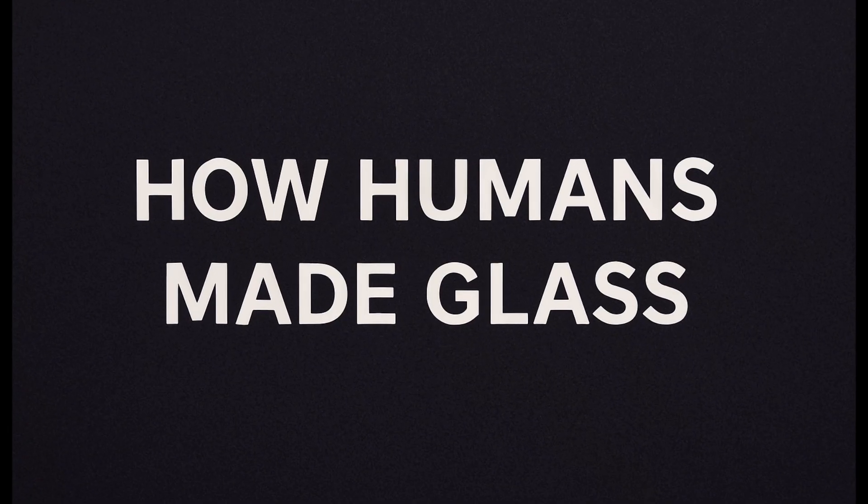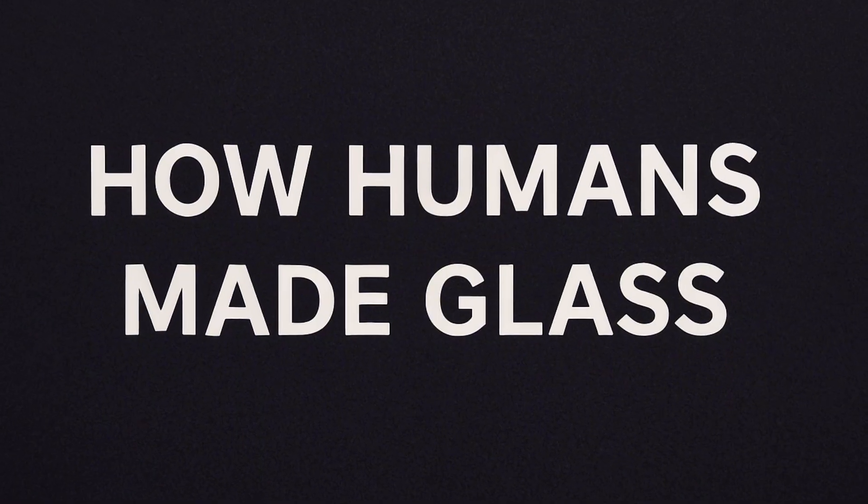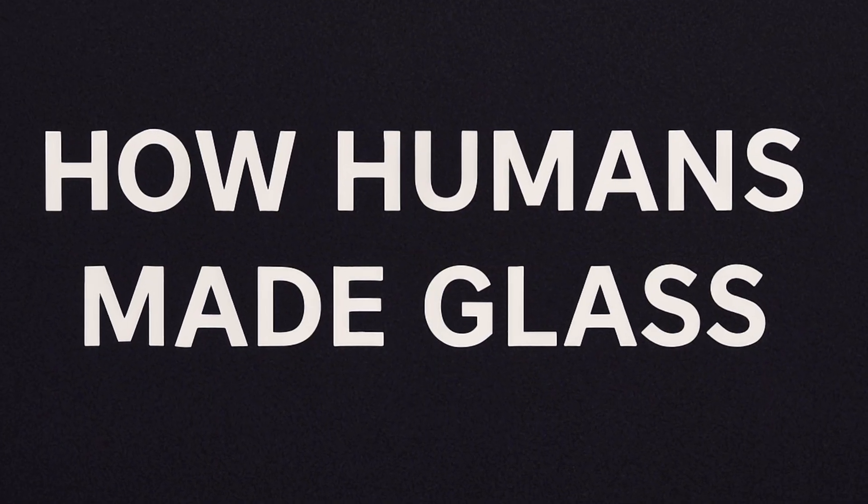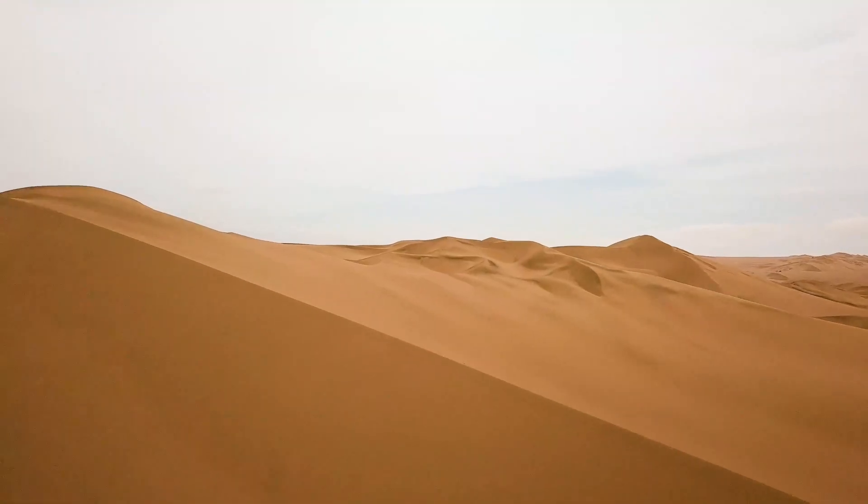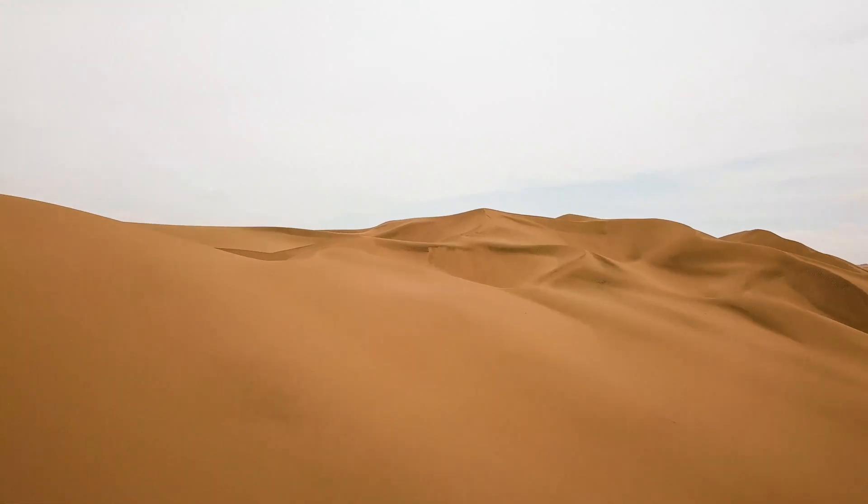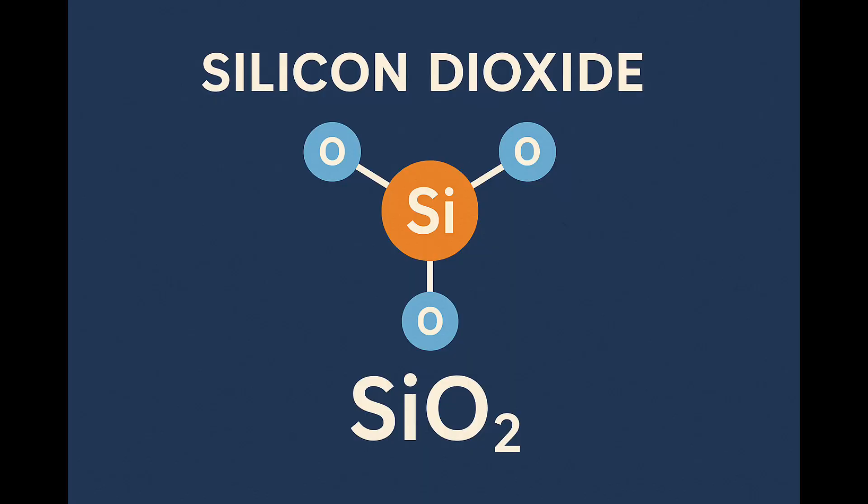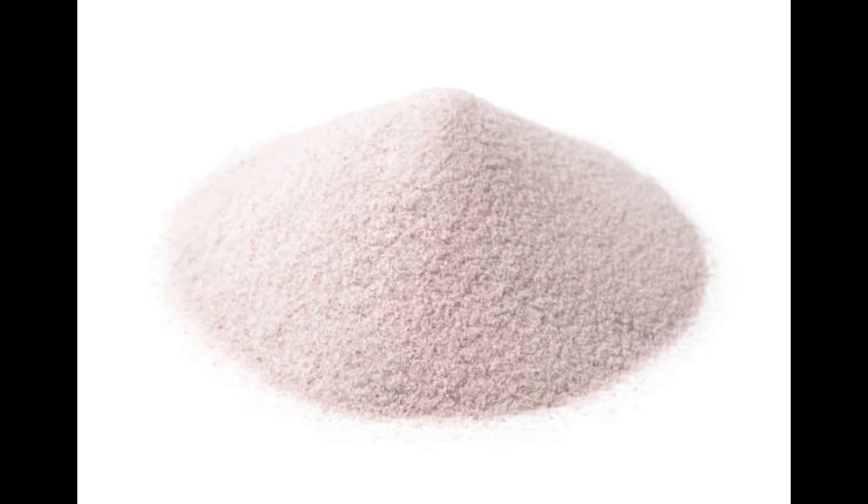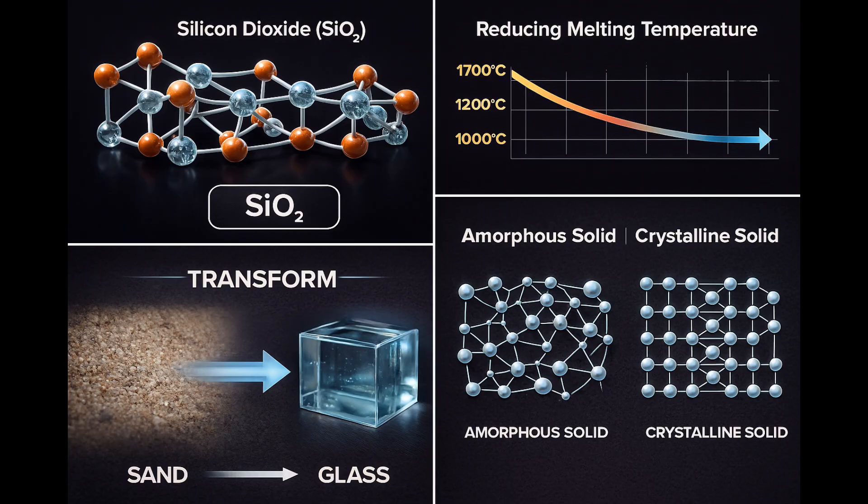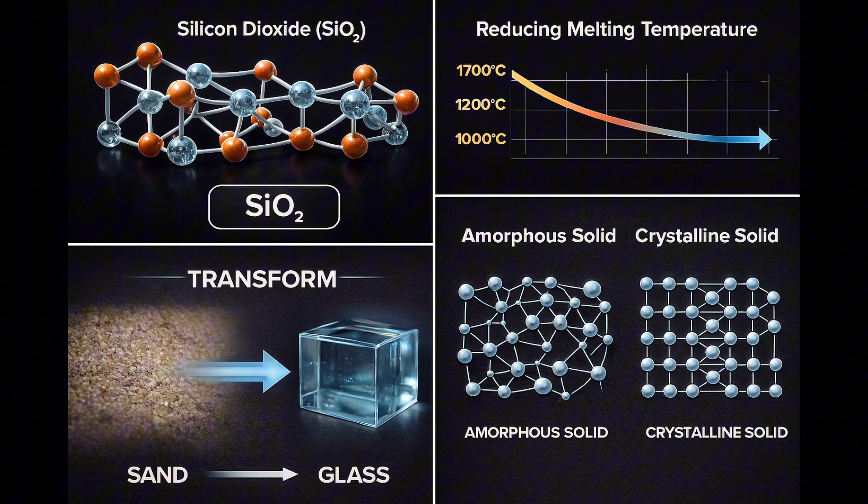Today, we're going to break down the science, engineering, and surprising origins of glass. Let's start with the basics. Most sand doesn't turn into glass. The magic ingredient we're looking for is a mineral called silica or silicon dioxide, SiO2. Silica sand grains are tiny, naturally occurring crystals.